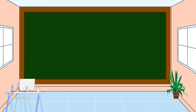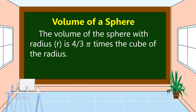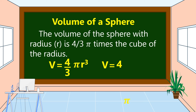Lastly, we'll discuss the volume of a sphere. The volume of a sphere with radius, characterized by small letter r, is four-thirds pi times the cube of the radius. So V = (4/3) × π × r³, or Volume = (4 × π × r³) ÷ 3.